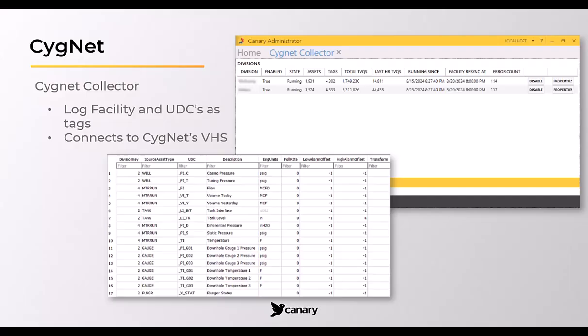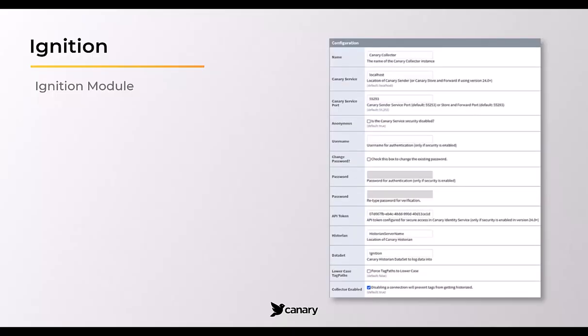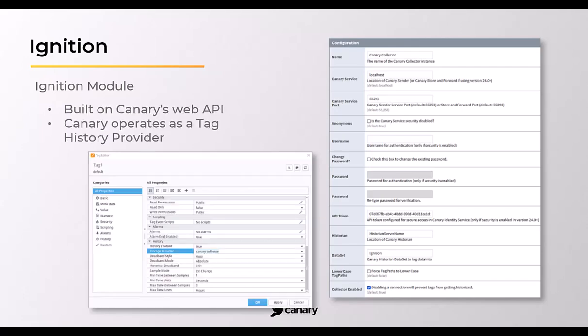The Ignition module is built using Canary's API to both read and write data from the Ignition platform. Canary acts as a tag history provider which users can select when enabling history on tags in the Ignition designer.